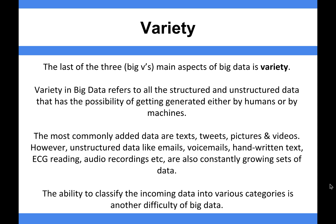This variety of different types of data is an issue because analyzing lots of different types of data becomes complicated. The most commonly added data includes things like text, tweets, pictures, and videos. But then you've also got unstructured data such as emails, voicemails, handwritten text, echocardiogram readings, and audio recordings — there's loads of them.